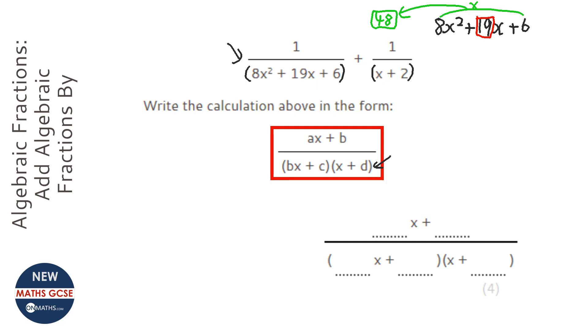So then I rewrite the 19x as 16 and 3. 3 and 16 doesn't matter.